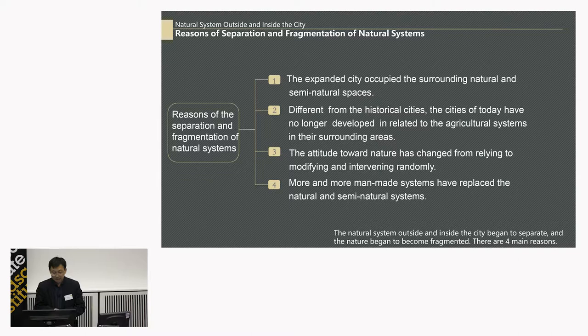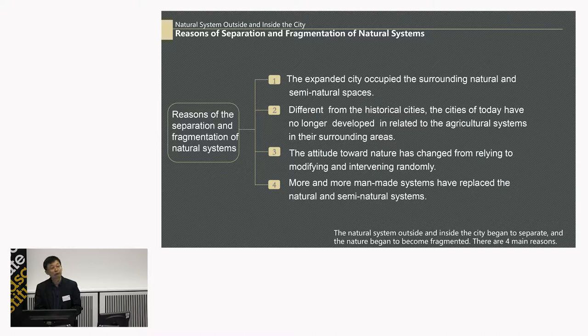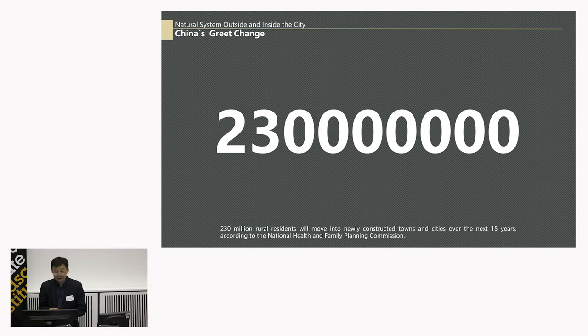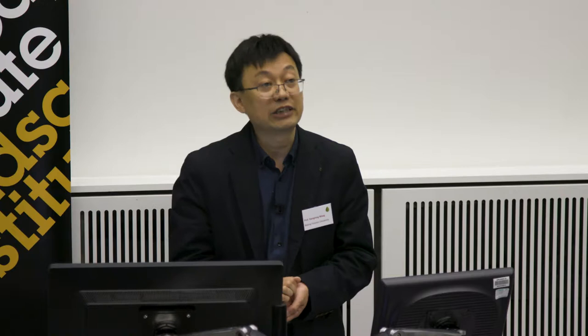I think there are four main reasons for this fragmentation. First, the expanding city occupies the surrounding natural and semi-natural areas. Second, different from historical cities, today's cities have no longer developed in relation to the agricultural system in their surrounding areas. Third, the attitude toward nature has changed from relying on it to modifying and intervening randomly. Fourth, more and more man-made systems have replaced the natural and semi-natural systems. According to the National Health and Family Planning Commission of China, in the next 15 years, 230 million rural residents will move into cities. Such scale and speed of urbanization have never happened in human history.